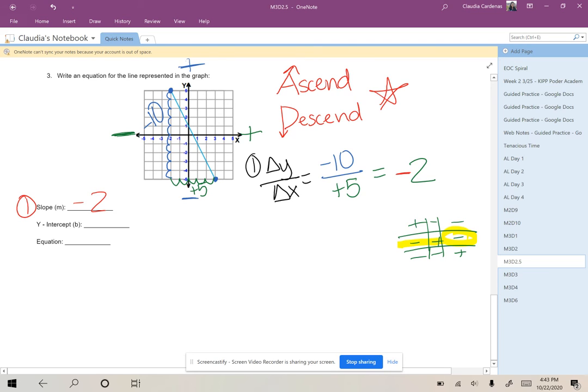So our slope is a negative two, which makes sense because our graph, if we look from left to right, is decreasing. So if I just looked at it visually, I know that it's decreasing. So that means it must be a negative slope. Just like in the last problem, our ascending or our increasing slope was positive.